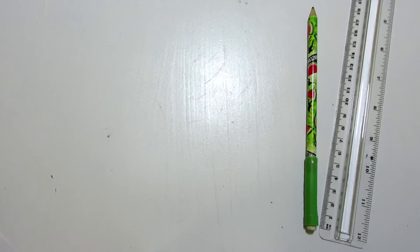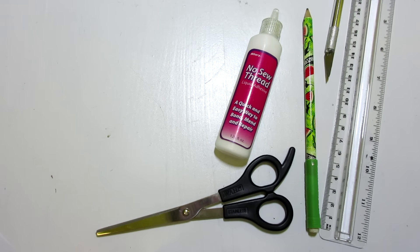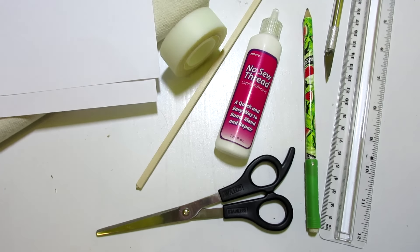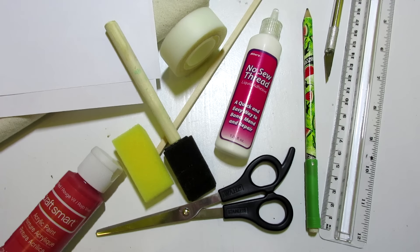A ruler, a pencil, some fabric glue, scissors, an exacto knife, a wooden strip. I'll have a link in the description below to the one that I use. Some fabric, two sheets of paper, some tape, a sponge brush, either one of these will work, and some paint in the color red.